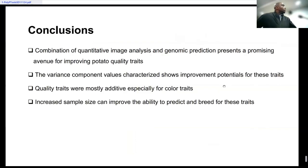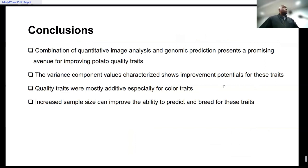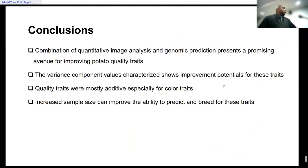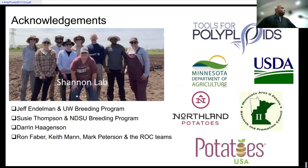To conclude, combining image analysis with genomic prediction presents a promising future for improved potato quality traits. The variance components characterized show potential for improvement in these traits. Quality traits, especially color, are mostly additive and should be the focus for cultivar development. Increasing population size can help improve prediction of these traits. I would like to acknowledge the Shannon Lab Braden Group, Jeff at the University of Wisconsin, and all others who contributed to this work. Thank you very much.